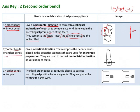Second order bends are also known as anchor bends, back bends, or artistic bends. These bends are given in the vertical direction and bring about mesiodistal inclination correction or uprighting of teeth. They are called artistic bends because at the end of treatment, when alignment is complete, certain teeth may be inclined unfavorably, so these bends are used to upright them. Since they are in the vertical direction, they can be appreciated from the frontal view.